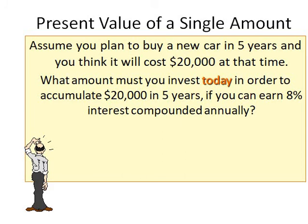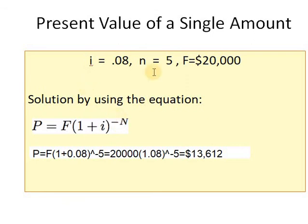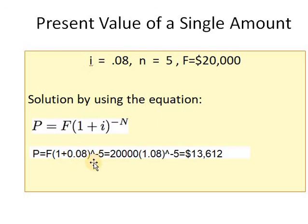I'm calculating the present value. Using the equation P equals F times (1+i)^(−n): the future value is $20,000, the interest is 8% (0.08), and n is 5 periods. So P equals 20,000 times (1.08)^(−5), which gives $13,612. This is the amount I must invest today at 8% to accumulate $20,000 after five years.